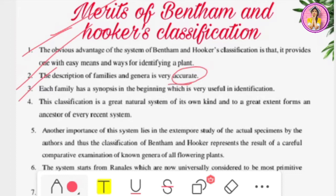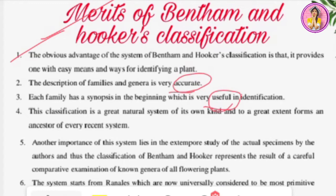The fourth point: the classification is a great natural system of its own kind and to a great extent forms the basis of every recent system. You just need to understand that Bentham and Hooker's classification is called the natural system of classification. Don't confuse 'natural' and 'artificial.' If your paper mentions 'natural system of classification,' please remember that it refers to Bentham and Hooker's classification.